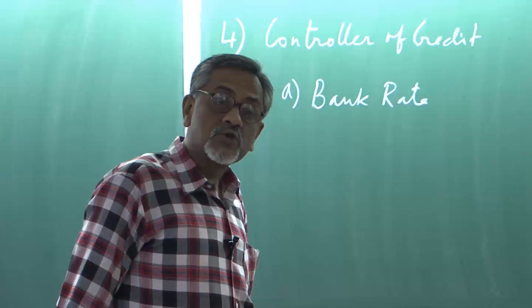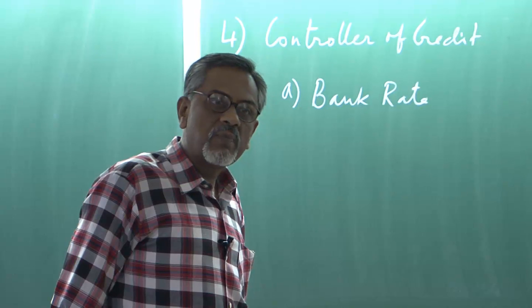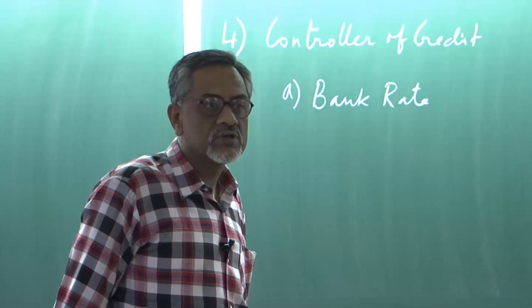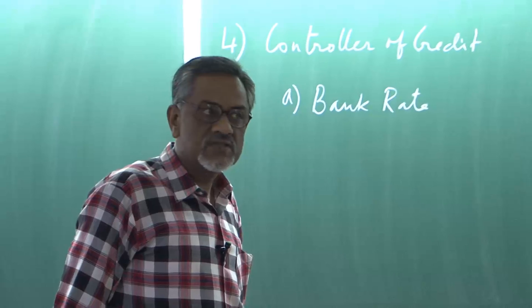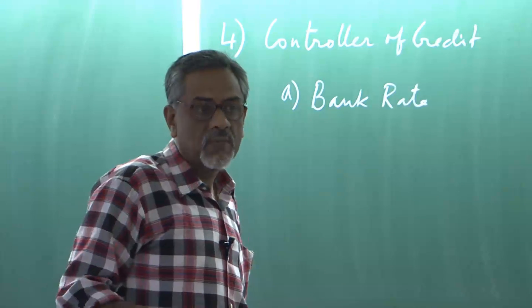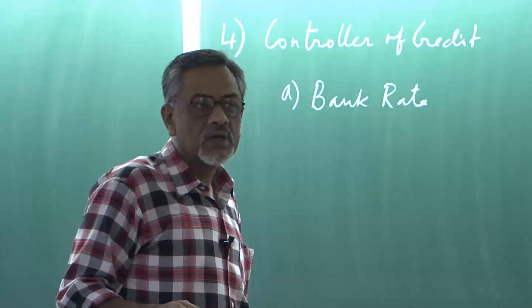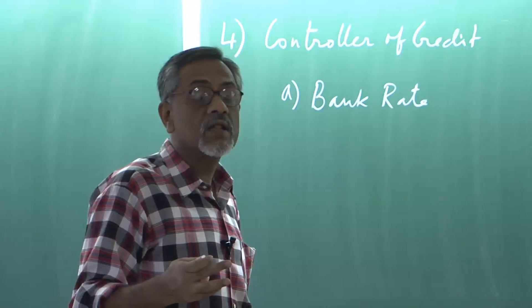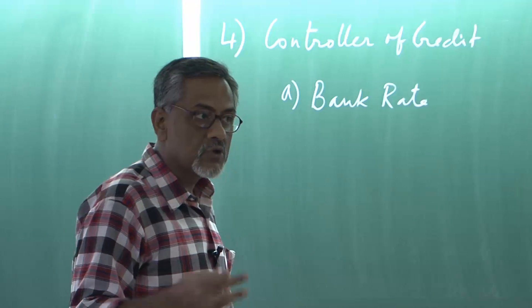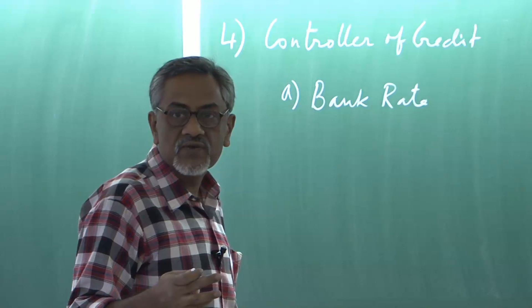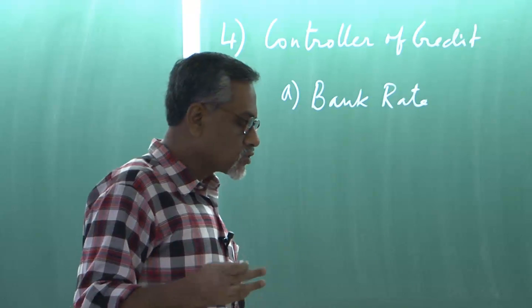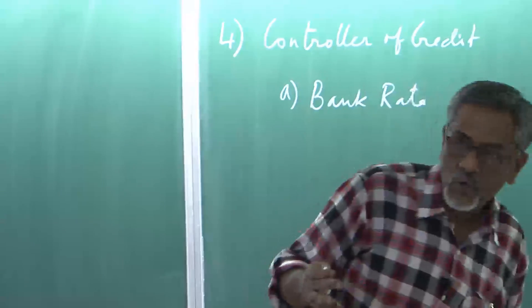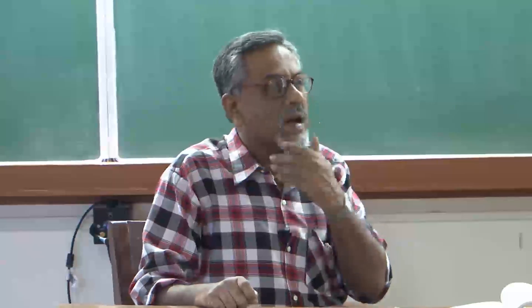This bank rate is often also used as the discount rate, when banks borrow money from the central bank against securities. Banks invest in securities - primarily risk-less securities. Banks are not allowed to invest in the share market, which is a risky or speculative investment. When banks invest, they invest in bonds - government bonds, semi-government bonds like state electricity board, railway bonds, infrastructure bonds, or private sector debentures.